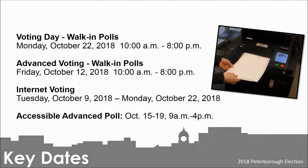Electors have four options when it comes to casting a ballot this October. They can vote on October 22nd — Election Day — at any of the 17 voting locations throughout the city. Electors can also vote online with a computer, tablet, or smartphone as early as October 9th. Advance voting using accessible technology is available at City Hall starting October 15th, and advance voting is also set for October 12th at five voting locations.